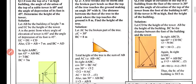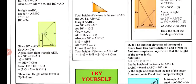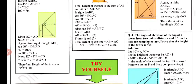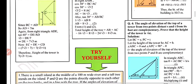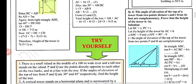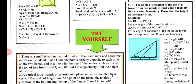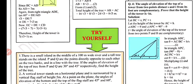That is all for question 3. Now question 4: the angles of elevation of the top of a tower from two points distant S and T from the foot of the tower are complementary. Prove that the height of the tower is √(ST).